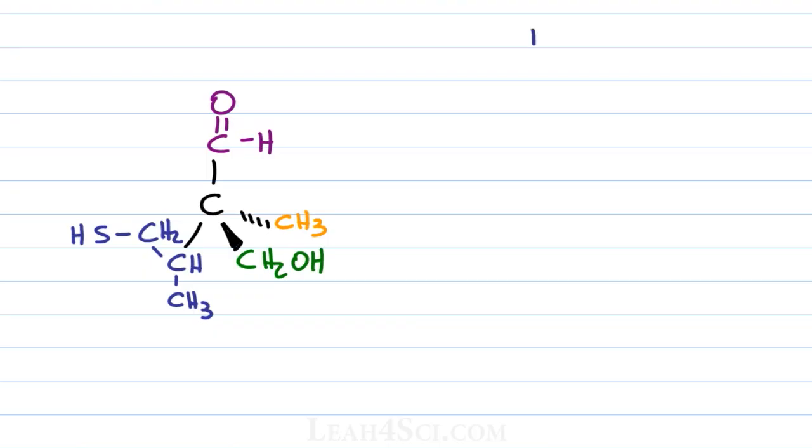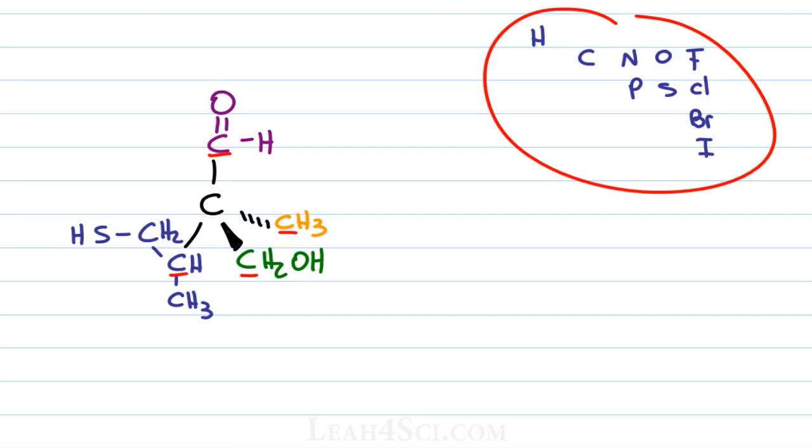To remind you, we're ranking substituents based on their atomic number and this is the guide that I have on the cheat sheet to help you remember which atoms will outrank which. So we look at our molecule and determine that we're comparing carbon to carbon to carbon carbon. We look back at our little guide and realize we're just comparing carbon. How do we figure out which substituent will rank higher or lower if every single one starts with carbon?